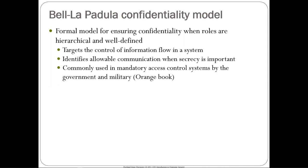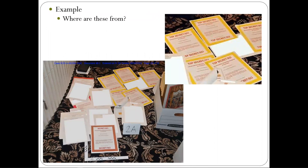An example you might have seen: the documents found in Donald Trump's Mar-a-Lago estate, clearly labeled 'Top Secret / SCI.' This reveals the mandatory access control system the government has in place to ensure confidentiality. The fact that these documents ended up there — confidentiality was violated — wasn't because the model didn't work. It's because the rules were violated.